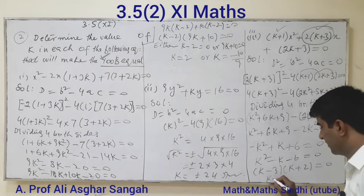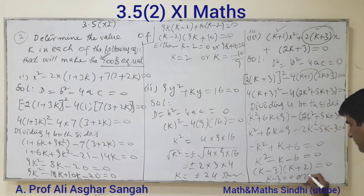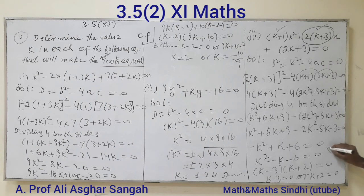Either K minus 3 equals zero or K plus 2 equals zero. Therefore K equals 3 or K equals minus 2. These are the answers.